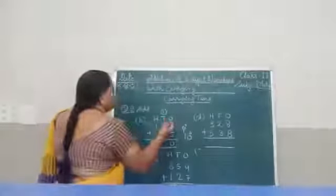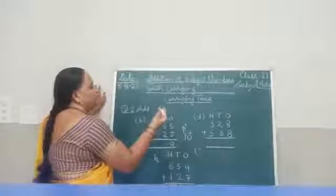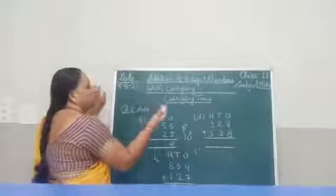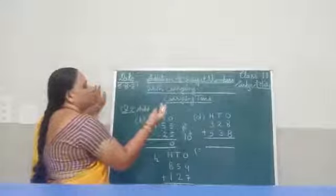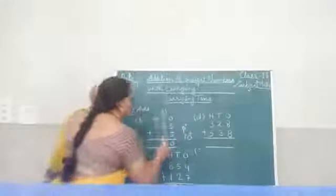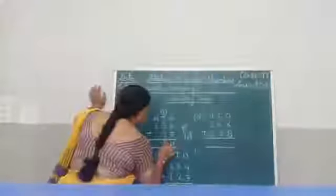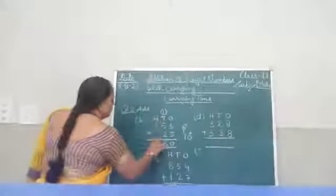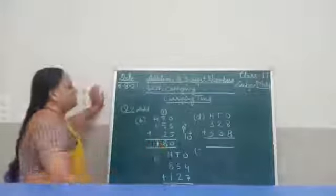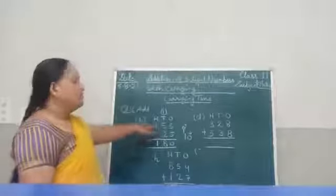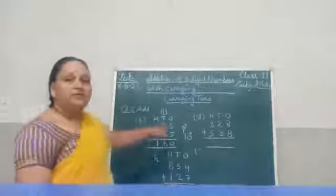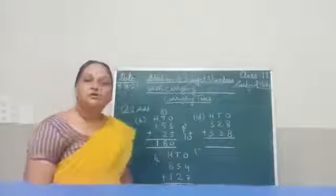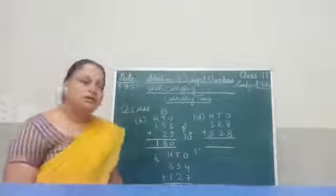5 plus 2 plus 1 of carry: counting gives 8. There is nothing under the 1, so we will write 1 as it is. 155 plus 25 is equal to 180.